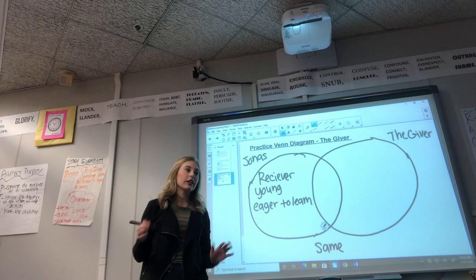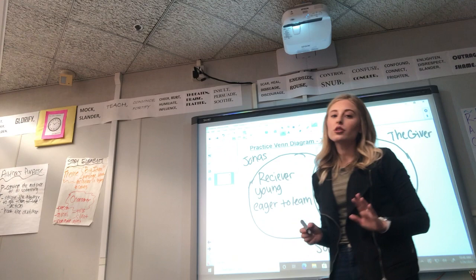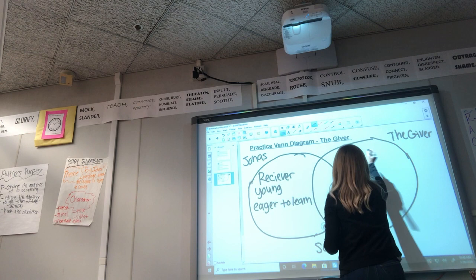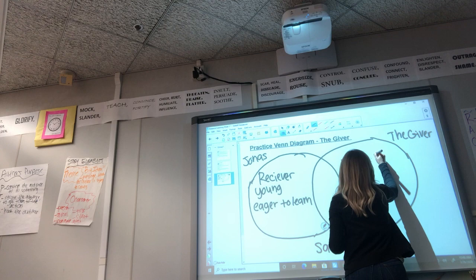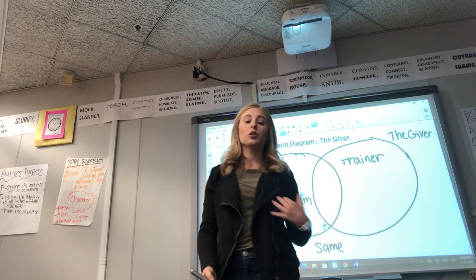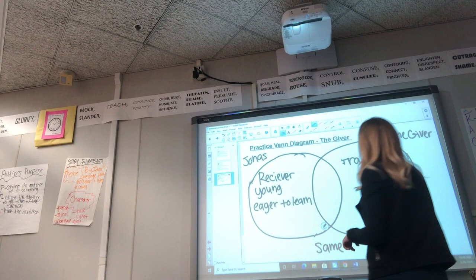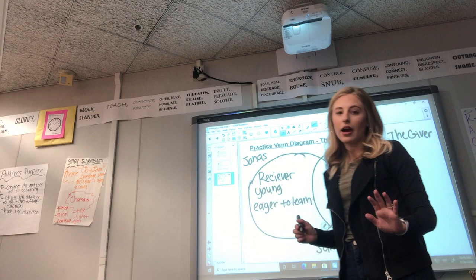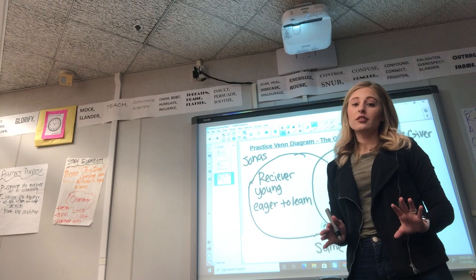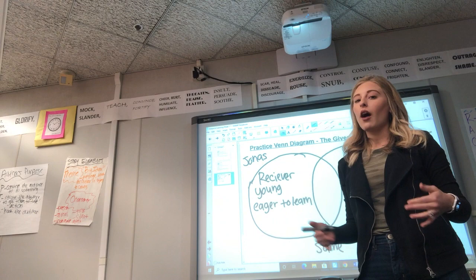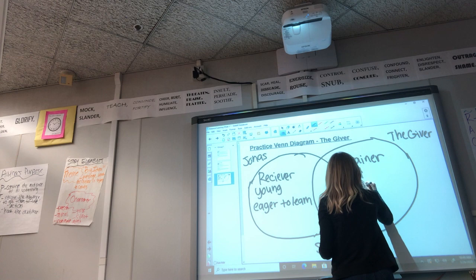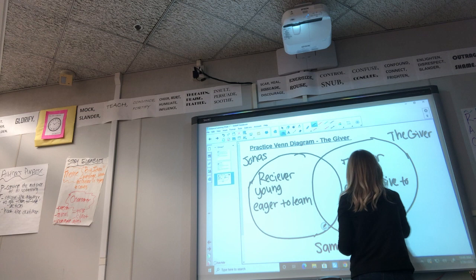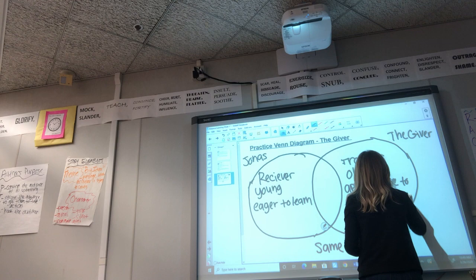Next we move on to the Giver. For most of the book, he's the person chosen to train Jonas, so he is considered the trainer. He's giving Jonas everything he needs to become the Giver. Looking at his physical attributes, he's old — not as young as Jonas, he's lived a very long life. And when we think about how he acts about training Jonas, you could say he's a little apprehensive — not as eager as Jonas. He's apprehensive about losing control of his memories and Jonas taking on this role.